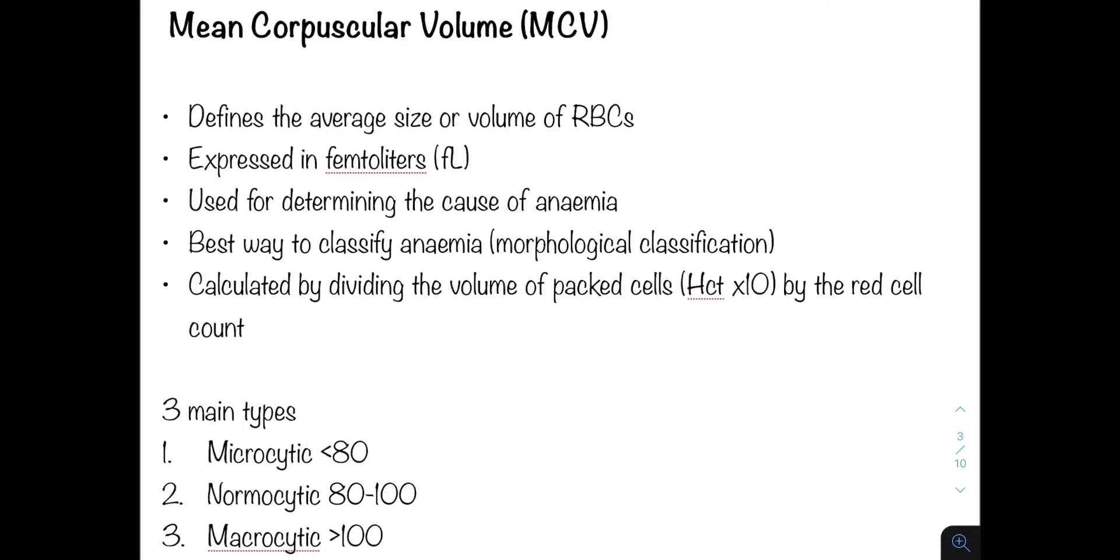The mean corpuscular volume, known as the MCV, defines the average size or volume of red blood cells and this is very important. Corpuscle means cell or body. This is expressed in femtoliters and importantly it is used to determine the cause of anemia. In fact, it is the best way to classify anemia and this is the classification that we shall use in the next episodes.